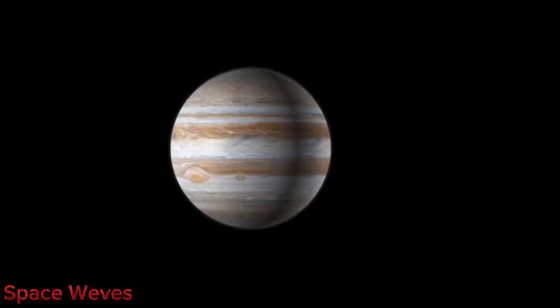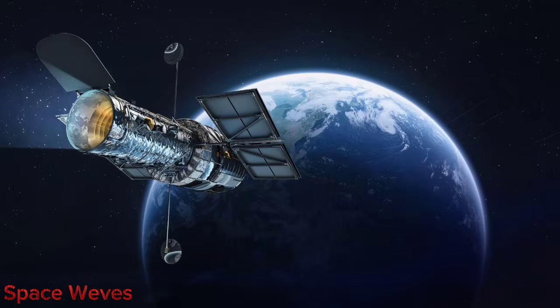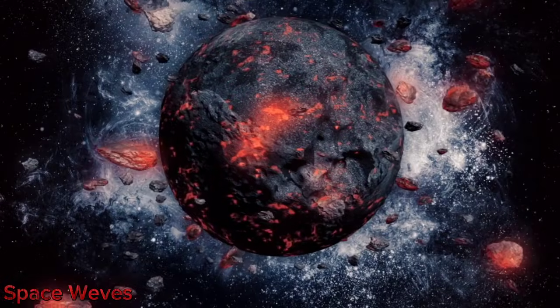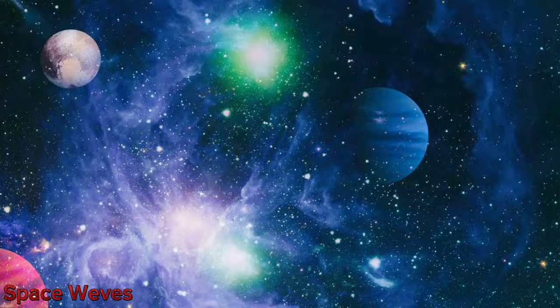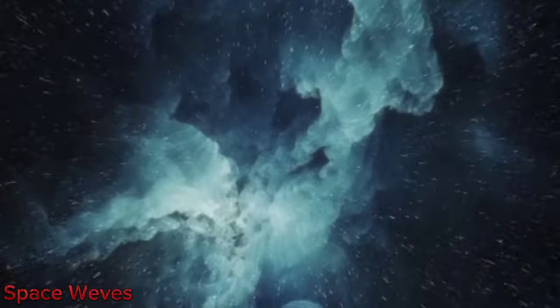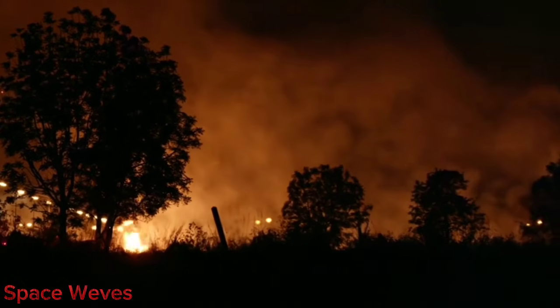When Betelgeuse finally explodes as a supernova, it will be one of the most extraordinary celestial events witnessed by modern humans. But what would happen when it does? Scientists estimate that the supernova would be visible even during the daytime and shine brighter than the full moon for several weeks. At its peak, it may even cast shadows at night due to its intense brightness. However, the good news is that Betelgeuse is about 640 light-years away, meaning its explosion would not pose a direct threat to Earth. Unlike supernovae that occur closer than 50 light-years, which could be catastrophic for Earth's atmosphere, Betelgeuse's distance makes it relatively safe for us. However, the explosion will still have profound scientific consequences.